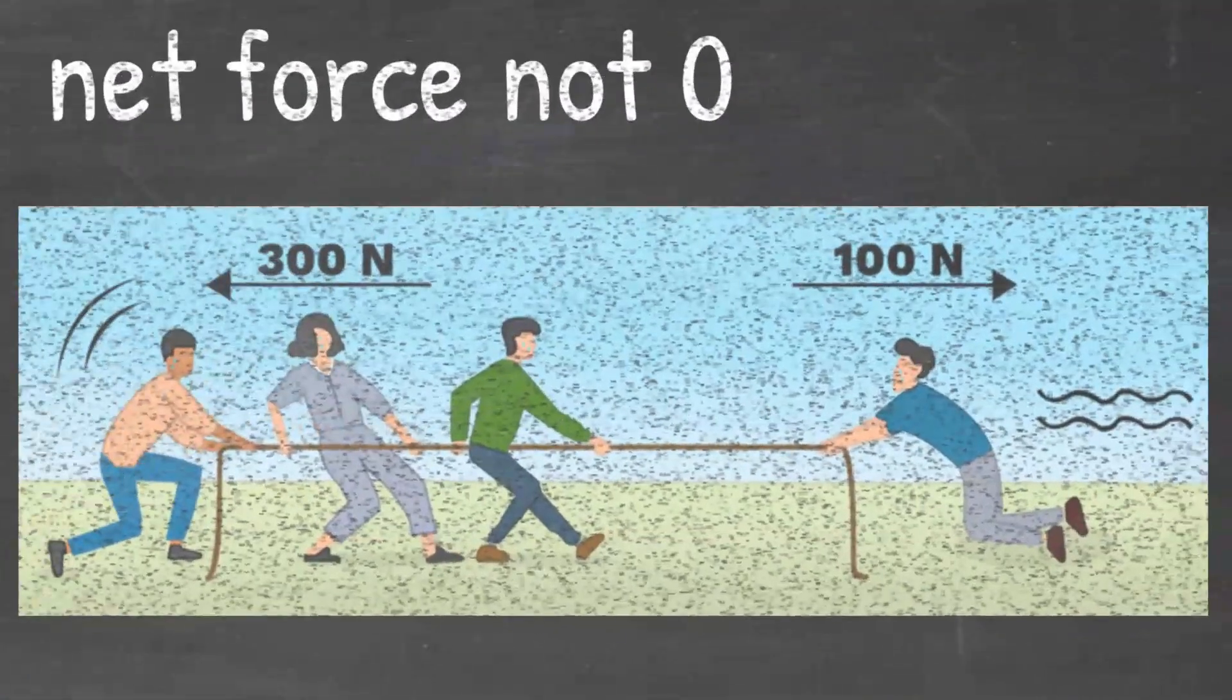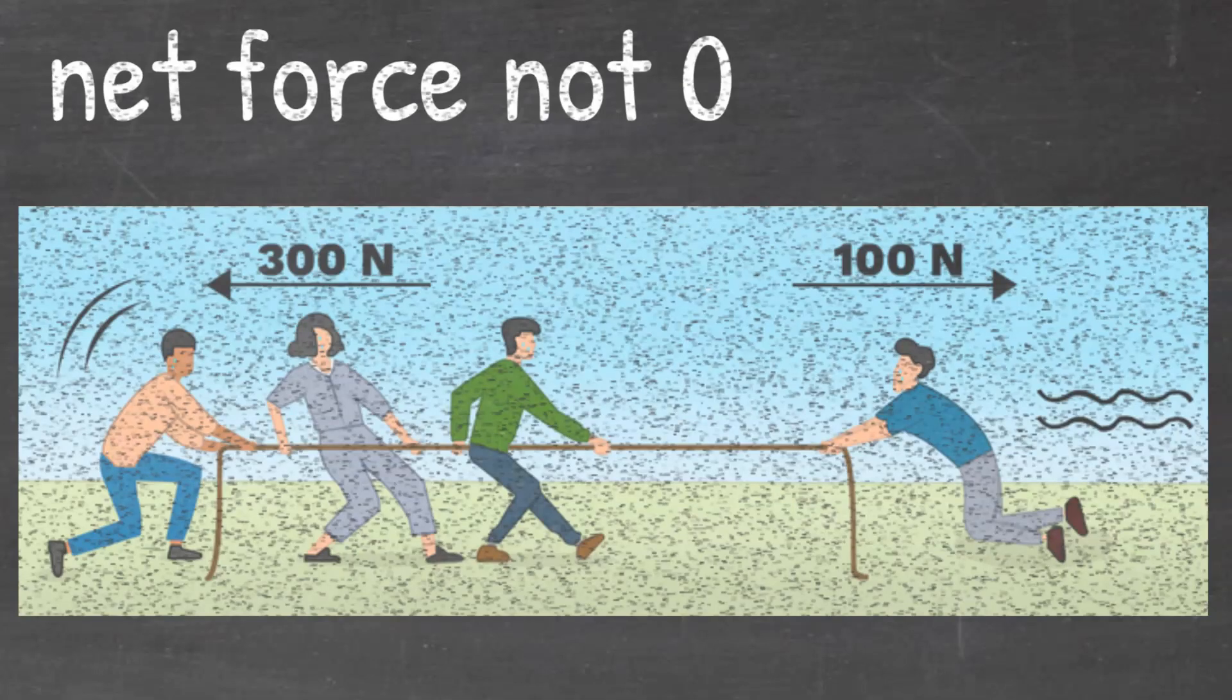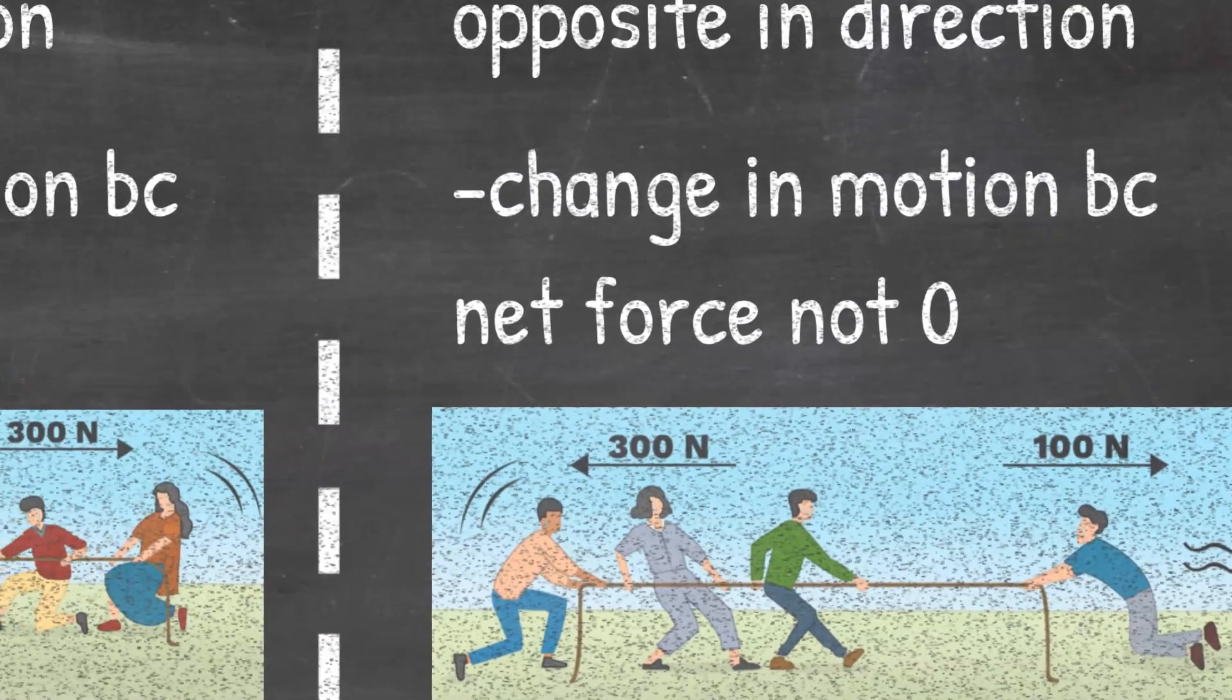And here we see an example of unbalanced forces. We see 300 Newtons being pulled to the left, but only 100 Newtons being pulled to the right. These are not equal in size, even though they are opposite in direction. If we were to subtract these numbers, we would get 200 Newtons to the left, which means that we have a net force that is not zero. This is how we know they are unbalanced.